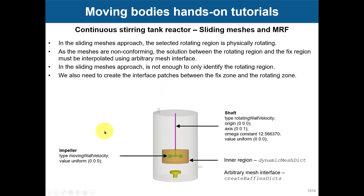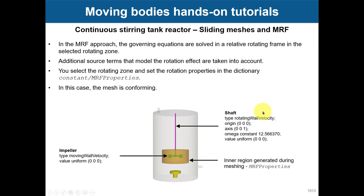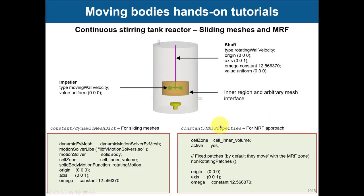If you use sliding meshes, it is slightly different. Again you need to select this region, but besides that, you need to select baffles. You are going to find two regions: one that is fixed and one that is rotating, and you intercommunicate information between both patches using cyclic AMI boundary conditions, because one is moving and the other is fixed.